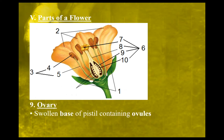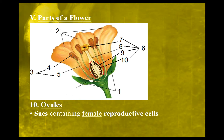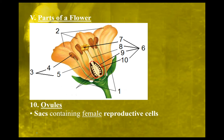Part nine is the ovary, which is a swollen base of the pistil. Within that swollen base, the ovary contains a bunch of ovules. The ovules are little tiny sacs found inside the ovary. Those little tiny circles inside represent the ovules, and they contain the female reproductive cells.